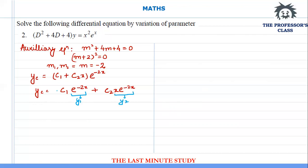Separating the constants, I call the first part y1 = e^(-2x) and the second part y2 = x·e^(-2x). To find omega, in the first row I write y1 and y2. In the second row I differentiate: y1' = -2e^(-2x), and for y2 I use the product rule.